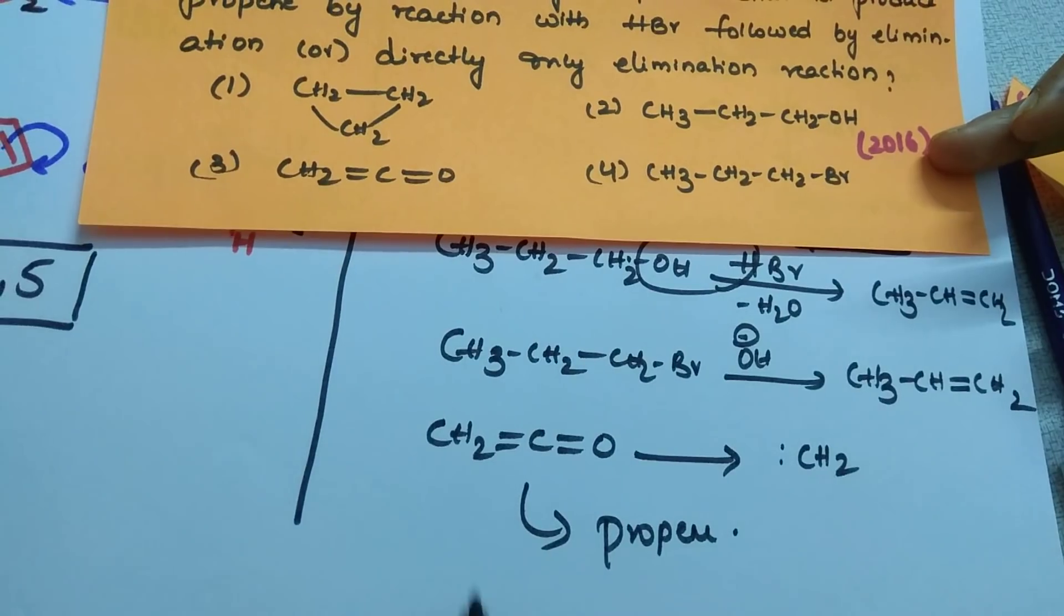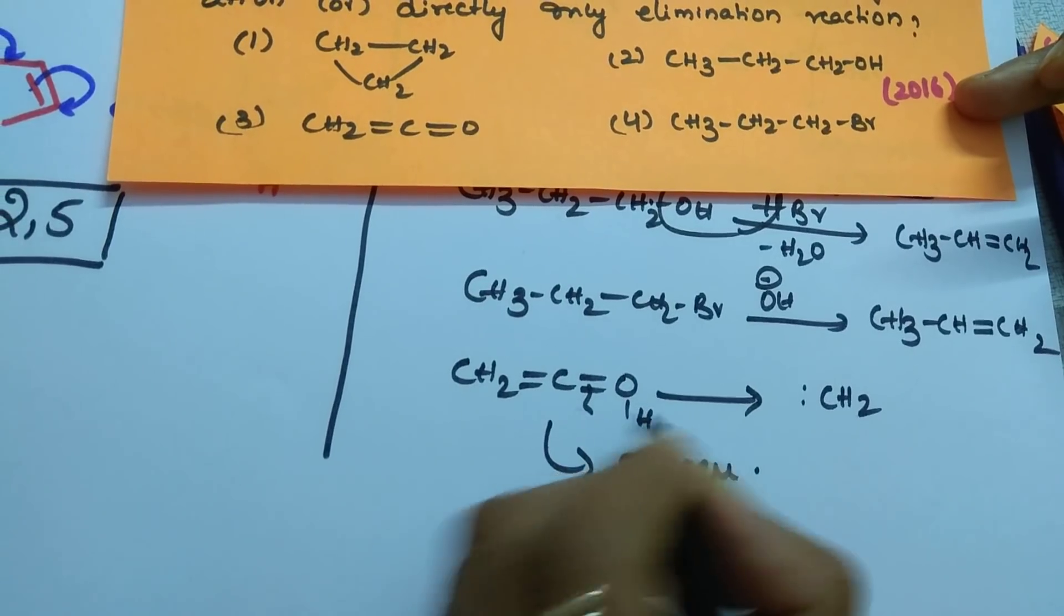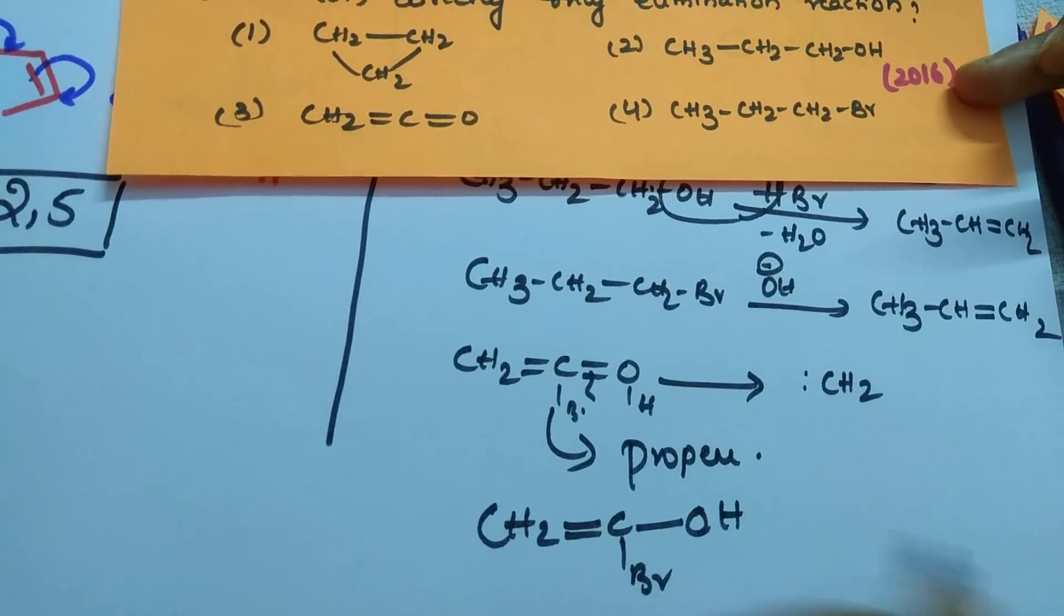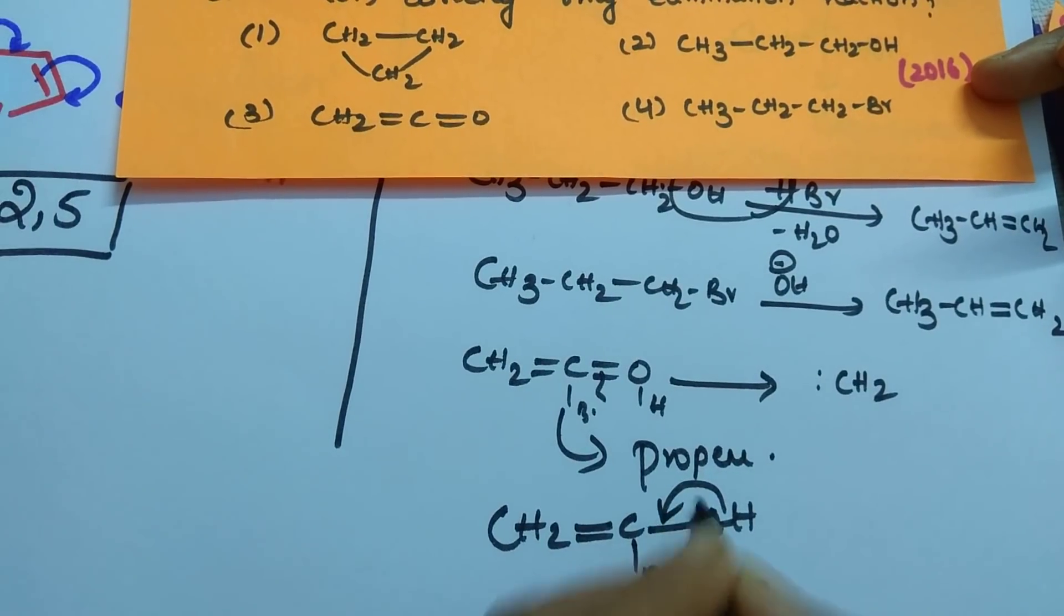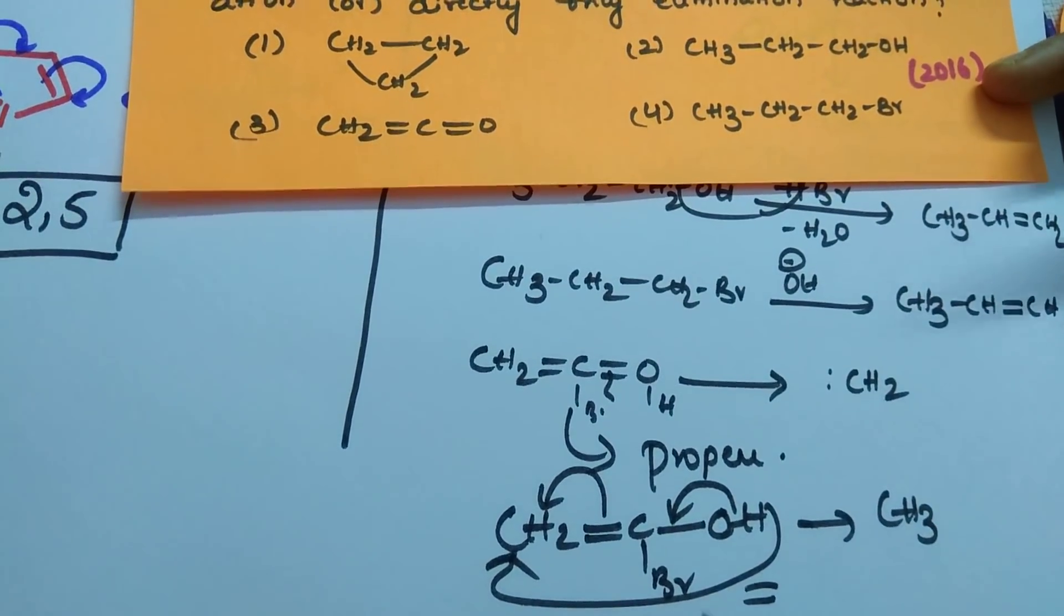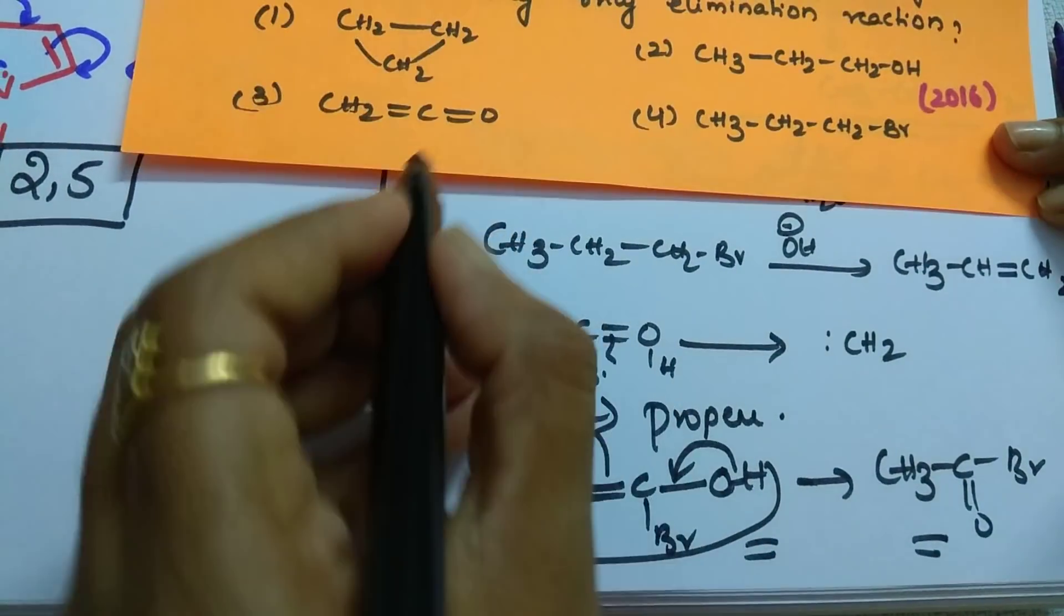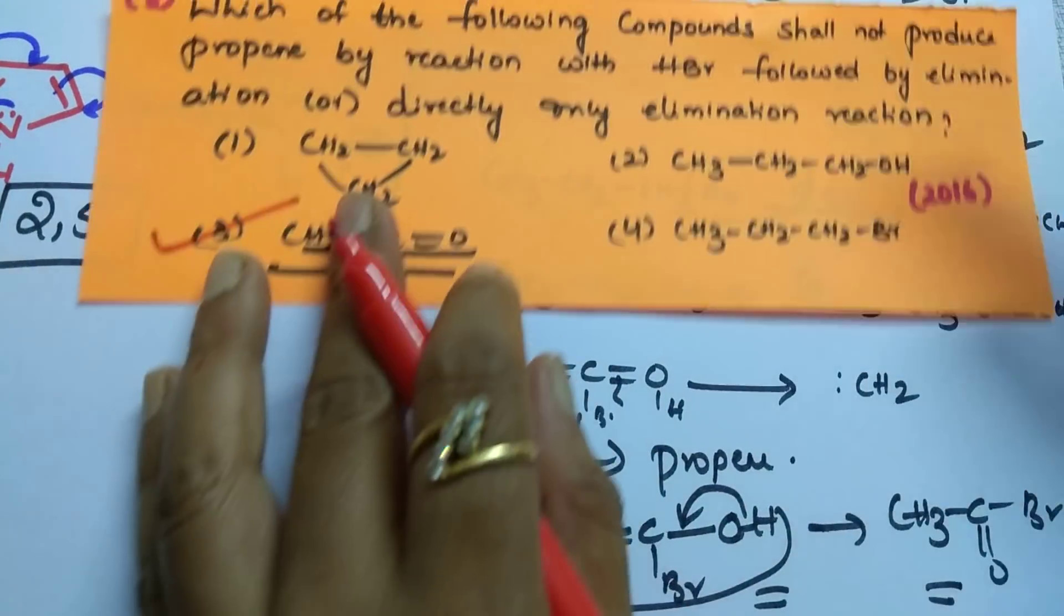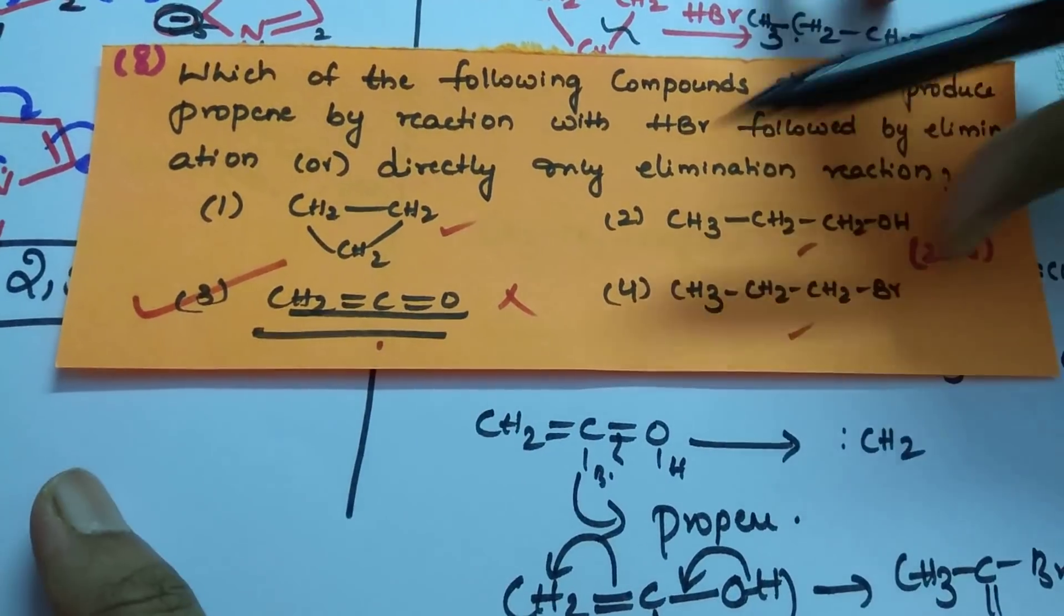Propene is a three-membered carbon. If you try to add HBr, then bond will break here. Here, hydrogen will attack. Here, Br will attack. Here, Br and here, hydrogen will attack. And you won't get, if it is undergoing keto-enol tautomerism, means this shifts here, this shifts here and this OH come and attack here. It results in the formation of CH3, C double bond, O, Br, not a propene. So, ketene is not a correct option. Means it is a correct option because they are asking which one won't produce propene. All these three will produce propene. It won't produce propene.